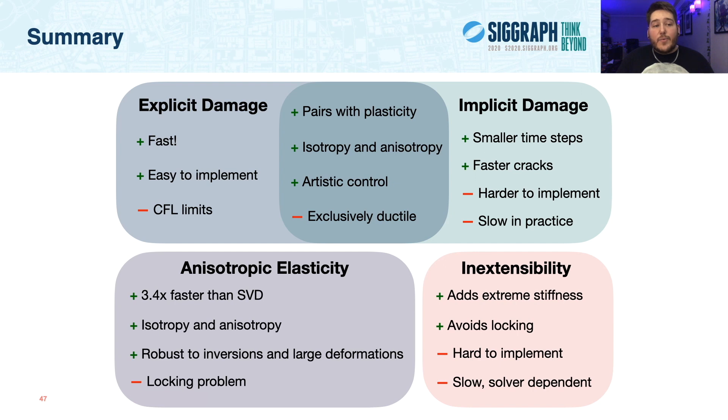As for our QR-based elasticity, we find that it's over 3.4 times faster than SVD-based elasticity, models both isotropy and anisotropy, is robust to inversions and large deformations, but does suffer from the classic locking problem. And finally, our inextensibility adds support for extremely stiff materials while avoiding the locking problem, but is hard to implement and can be slow, depending on the solver.